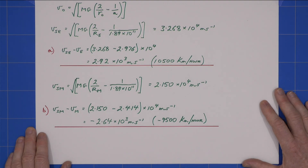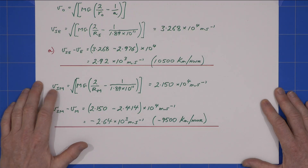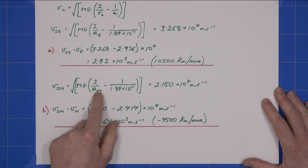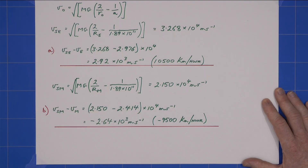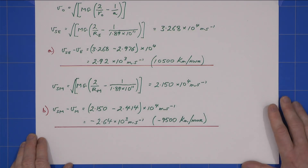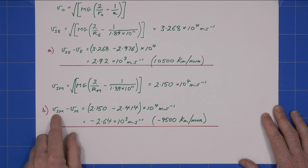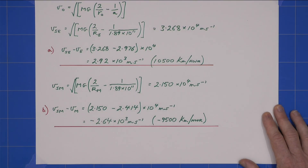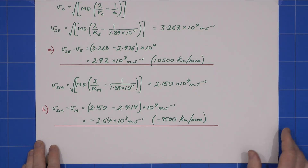I do a similar thing for Mars: when we're at the distance Mars is from the Sun, I feed in this expression and find the speed the spacecraft is doing at that point. Our relative speed compared to Mars is one minus the other, giving about 9,500 kilometers per hour, and it's negative.